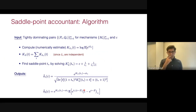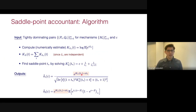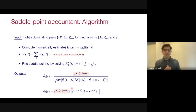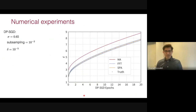The term common to both accountants is closely related to the moments accountant. The moments accountant is exactly this term, but instead of using T*, it minimizes the exponential over all possible values of T. So the saddlepoint accountants can be thought of as corrected versions of the moments accountant, where the correction term for the first accountant is a denominator factor, and for the second accountant it is the Gaussian expectation term.